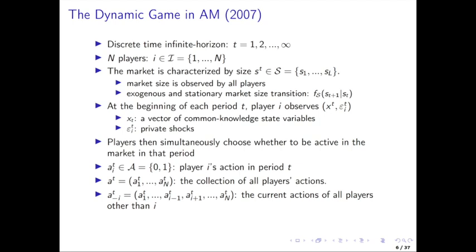Then firms simultaneously make choices — whether or not to be active in the market in that period. Let A_i_t be the binary indicator, zero or one, for whether firm i is active in period t. A_T is the collection of all players' actions. And A_{T,-i} is the collection of current actions for all the players other than firm i. This is standard notation and it's good to get in place.